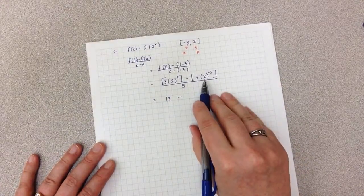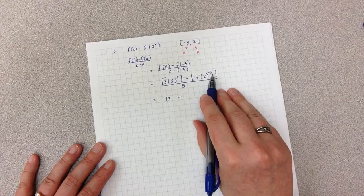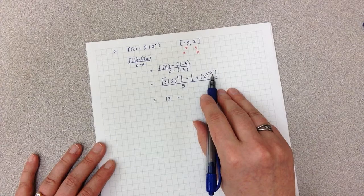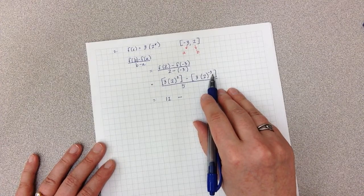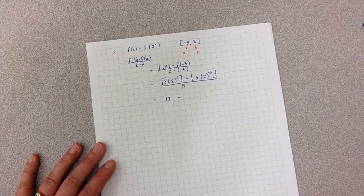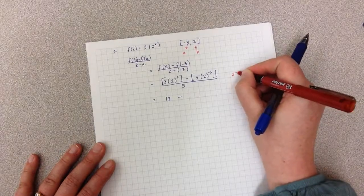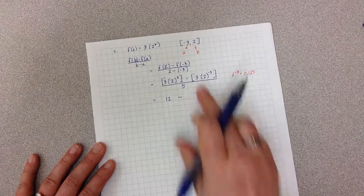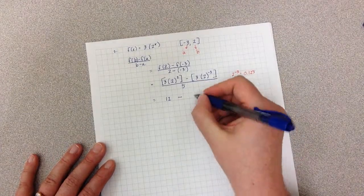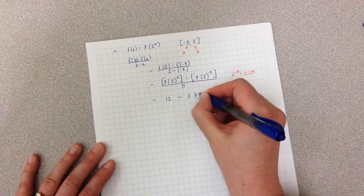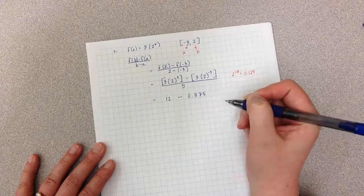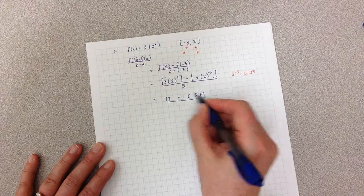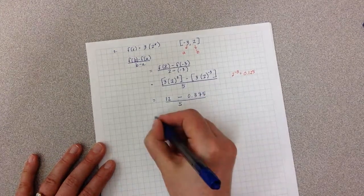Minus 2 to the negative 3 power is a fraction or a decimal. In this case, that decimal is 0.125. Make a little note of that. And when I multiply that by 3, I get 0.375. I then am dividing that by my denominator of 5.